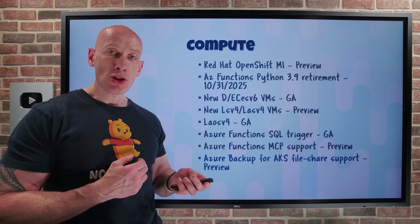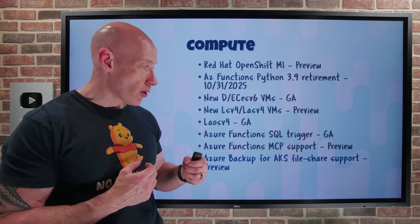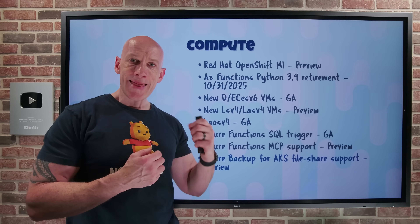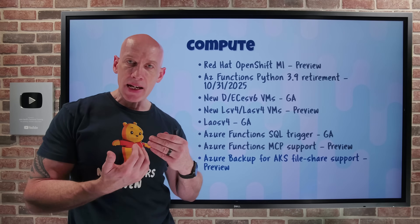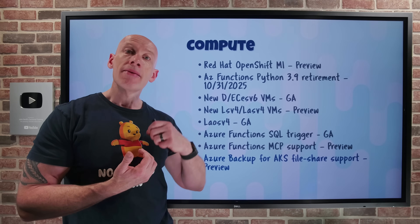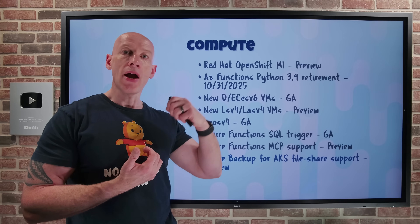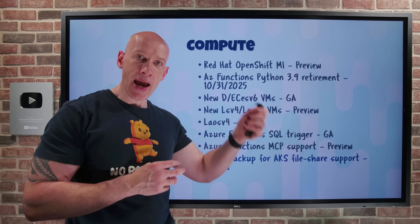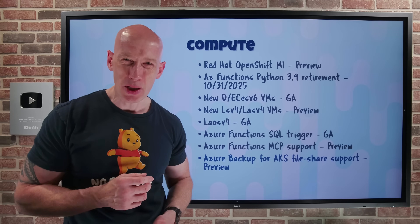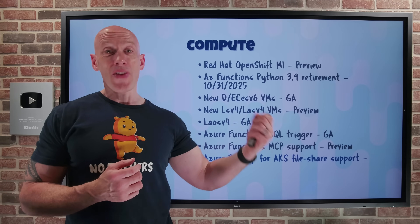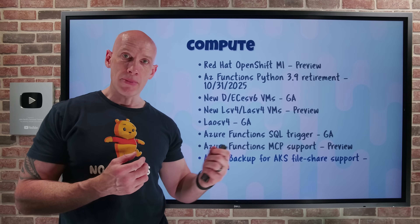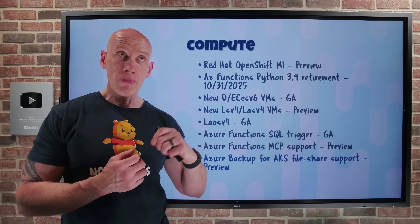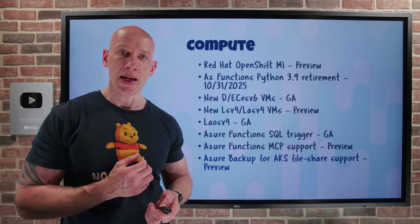Azure Backup for Azure Kubernetes Service now supports file share backup. If you're using Azure Files as the backend for a persistent volume in AKS, the Azure Backup integration will now protect that data on your Azure file share. It already had Azure Disk support. The benefit is you get instant backup and restore via snapshots and up to 30 days of retention.